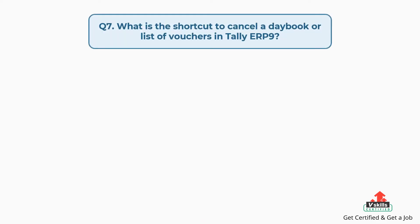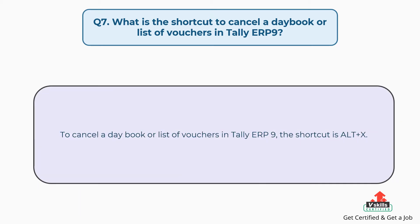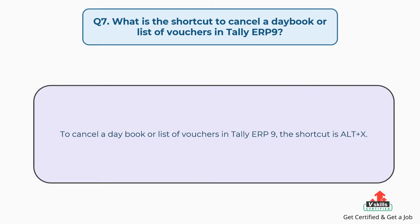Question number seven: what is the shortcut to cancel a daybook or list of vouchers in Tally ERP9? To cancel a daybook or list of vouchers in Tally ERP9, the shortcut is ALT plus X.